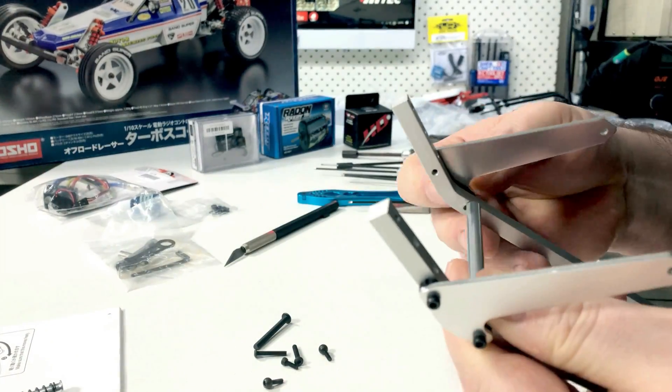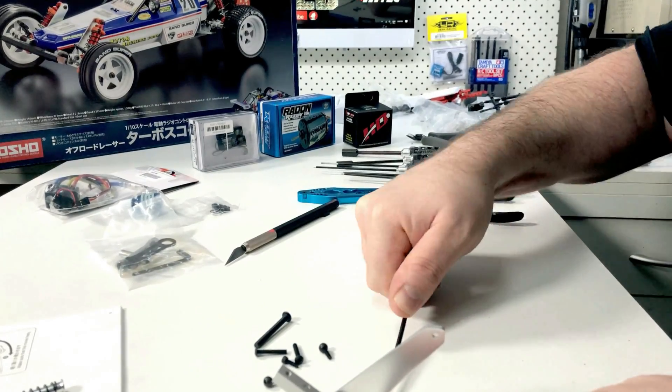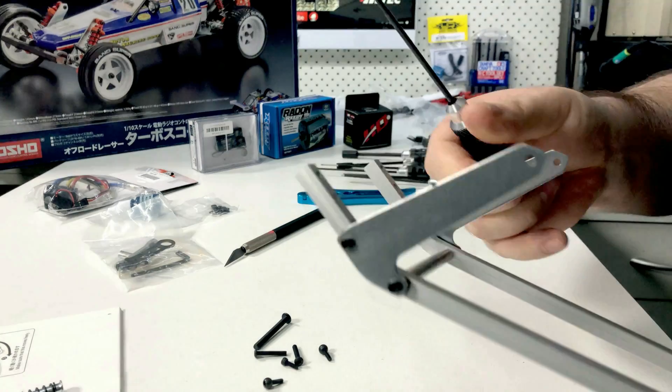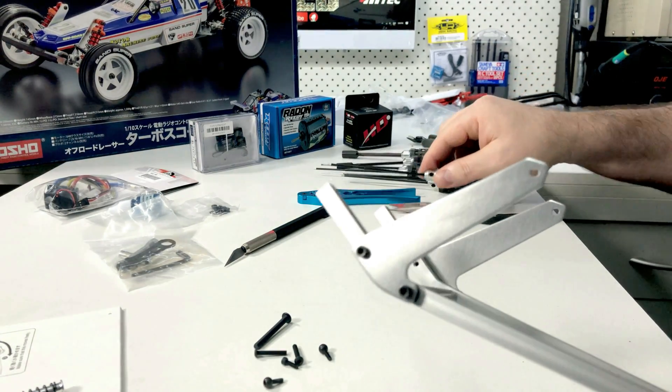So the first thing we do is screw on the front shock mounts. Screw them onto the chassis rail, then we've got the supporting rod that goes between the chassis rails. We'll screw that in too.